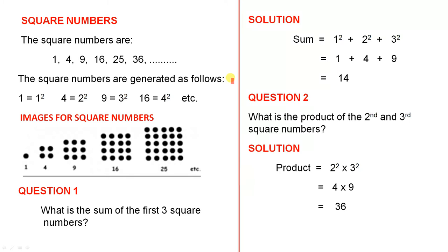The square numbers are generated as follows. The first square number is 1, which is 1 squared. The second square number is 4, which is 2 squared.